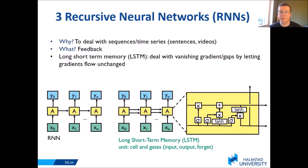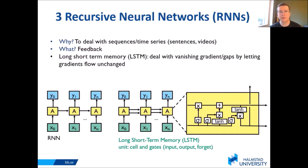RNNs were not terribly good with problems like looking very far back into the past. One technique designed to help with that was long short-term memory (LSTM), which can deal with vanishing gradients and gaps by letting gradients flow unchanged using gates — input, output, and forget gates. It's a more complicated version also using RNN structure.